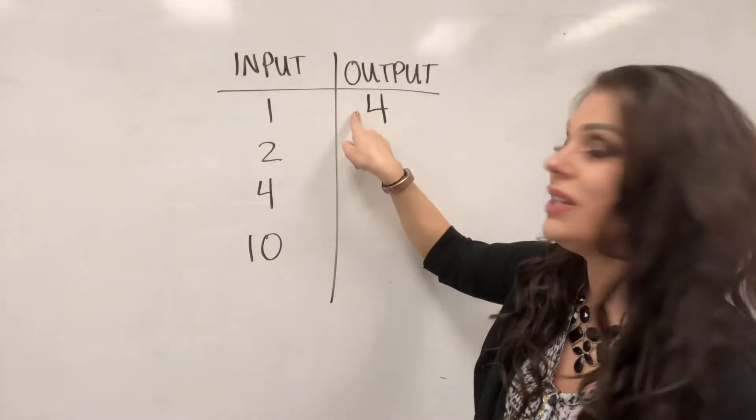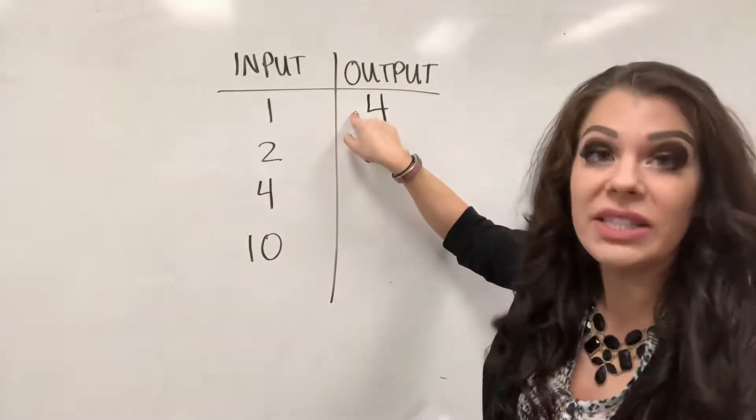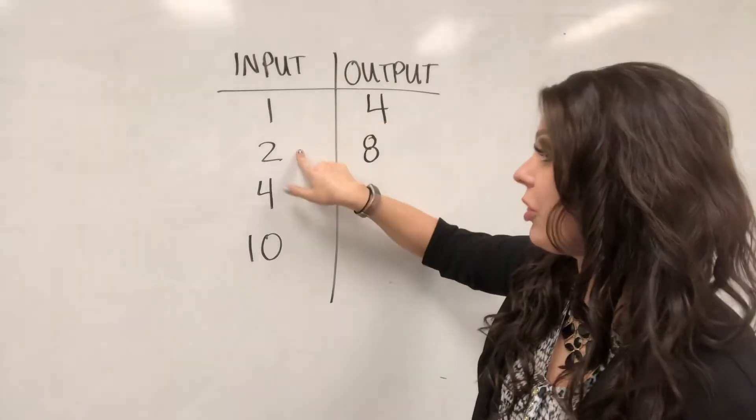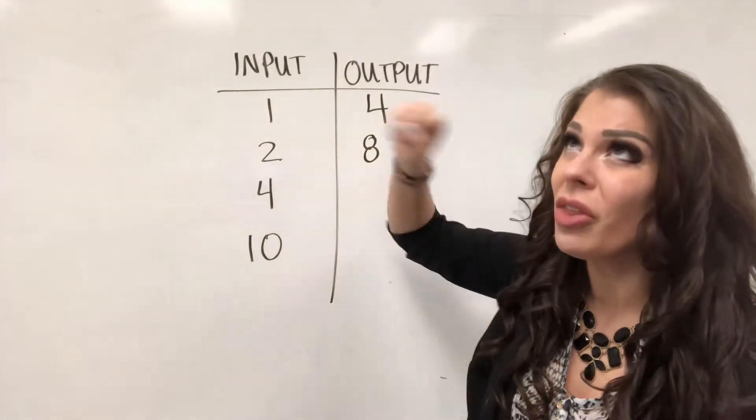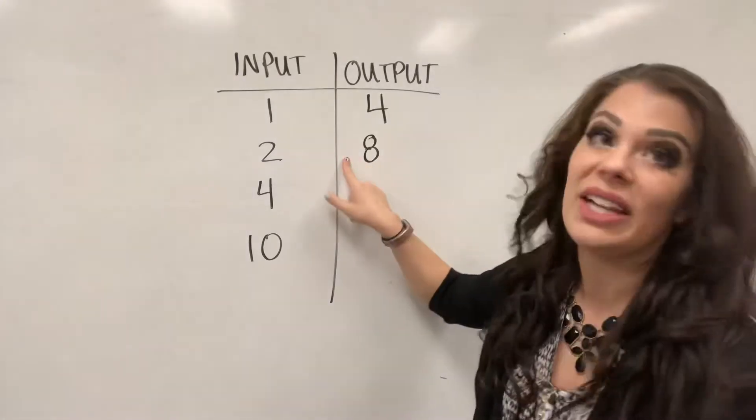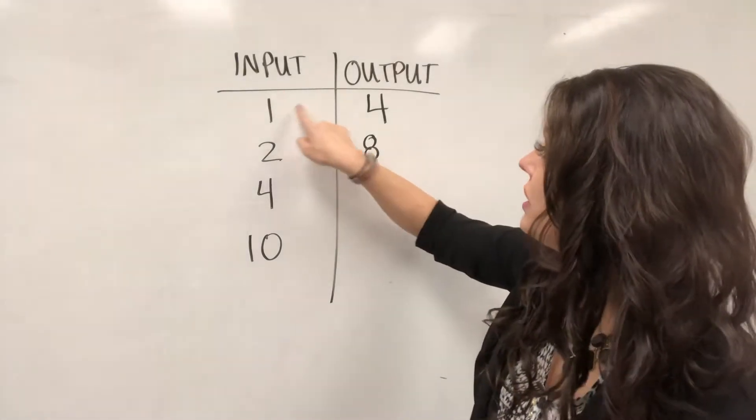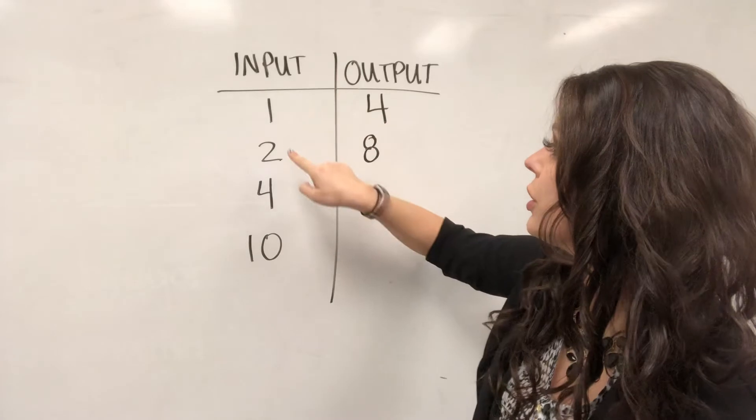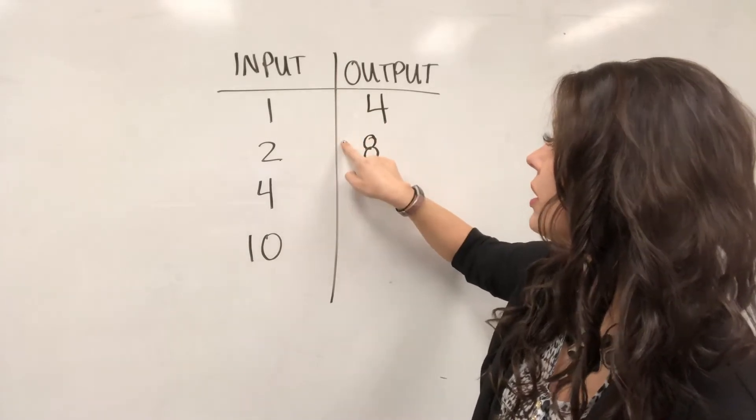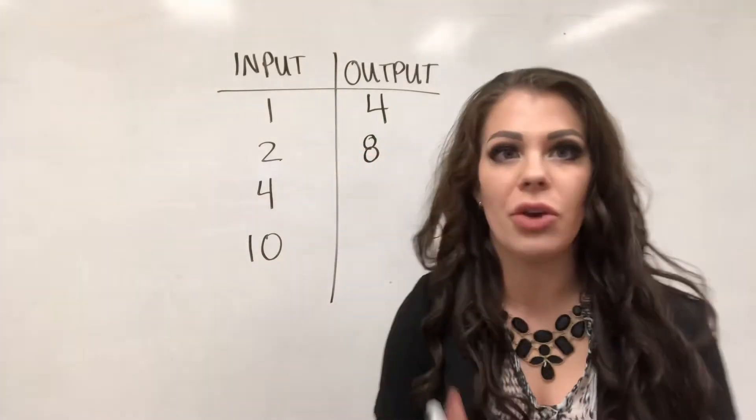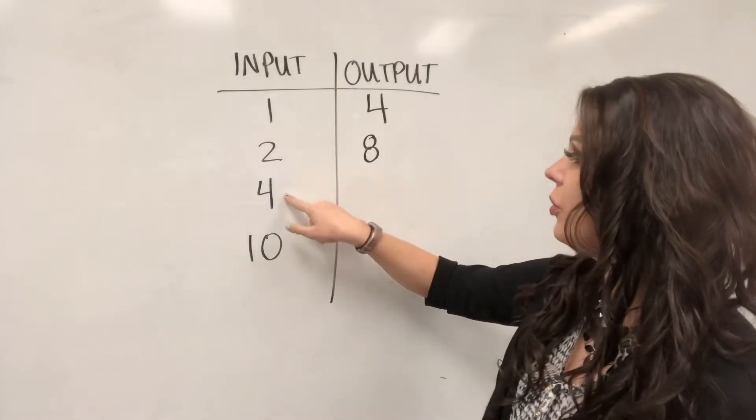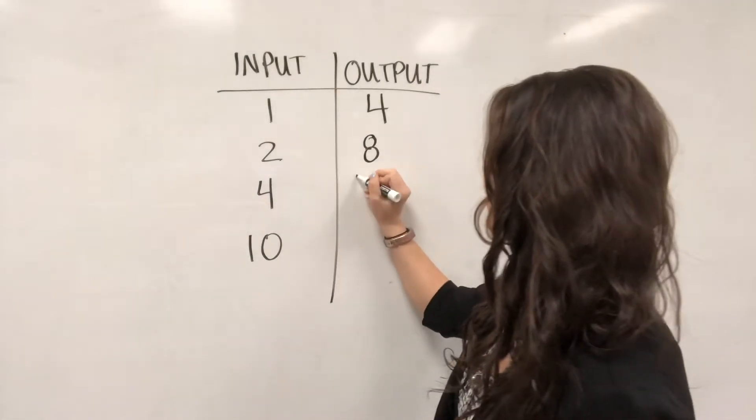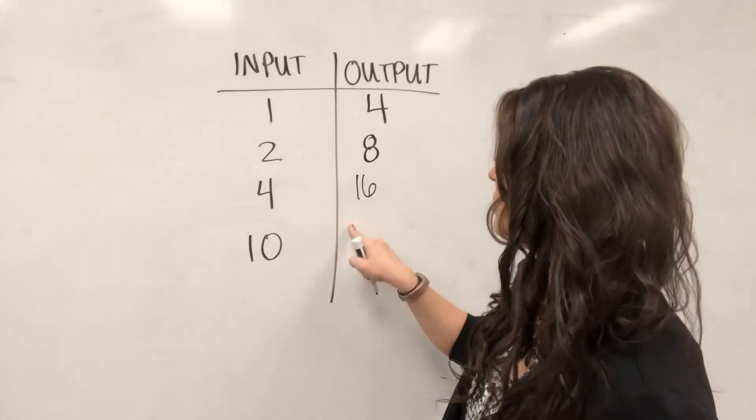If I add 3 to 1, does it turn into 4? Yeah, but let's check that pattern. If I add 3 to 2: 2, 3, 4, 5, that doesn't make 8. So 1 times 4 equals 4, 2 times 4 equals 8. So now that I know the pattern, I can now do 4 times 4 equals 16 and 10 times 4 equals 40.